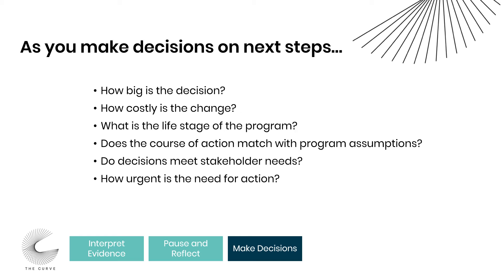A small tweak might be informed by a few simple observations, while a programmatic shift might need a larger amount of higher quality evidence. Similarly, there might need to be more stakeholders involved and more involvement from a donor organization if you plan to completely shift the course of your program. A related consideration is how costly is the change — if it's a free or low-cost solution, it might be easy to iterate and implement. However, if the change is a larger one, that might need more consideration and approval from a donor or other key stakeholders before implementation. You might also see if there are less costly approaches that give a similar result.